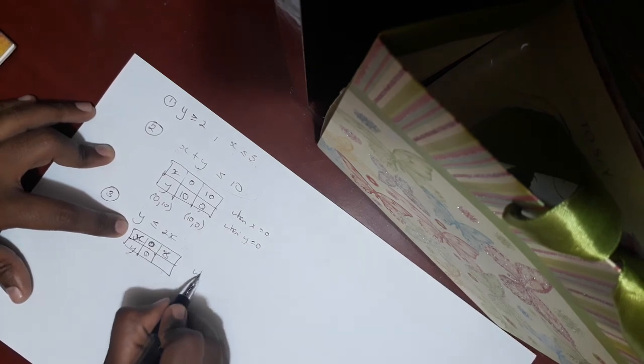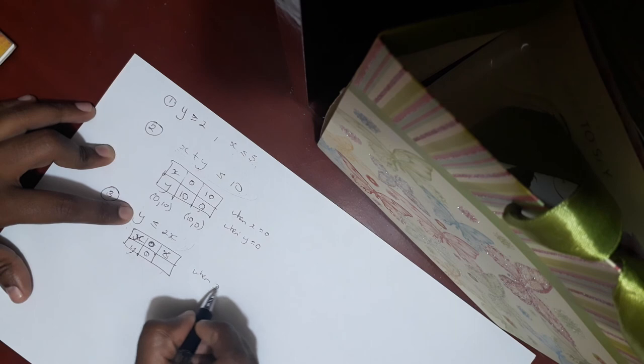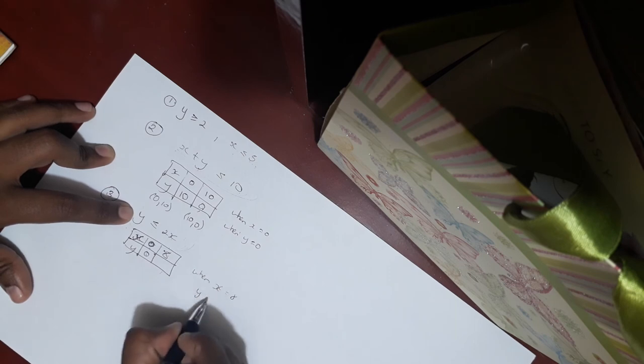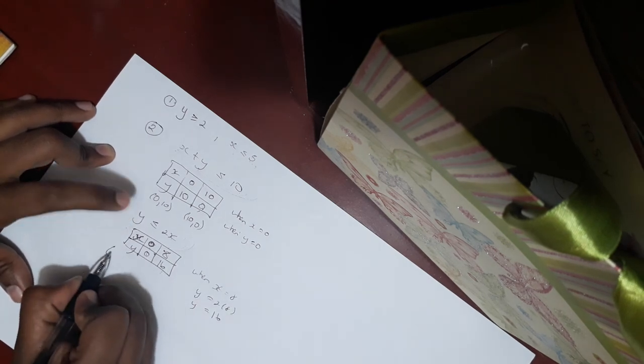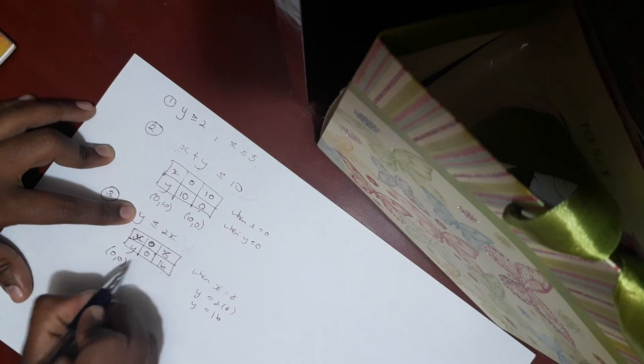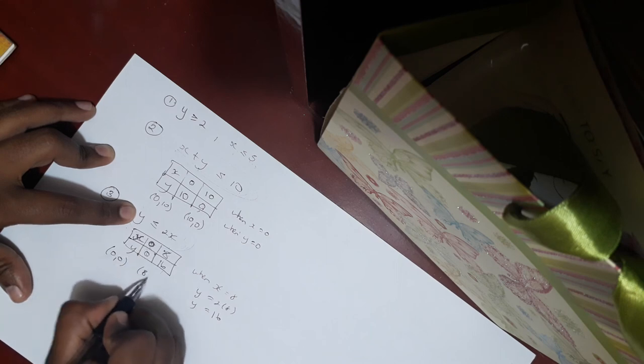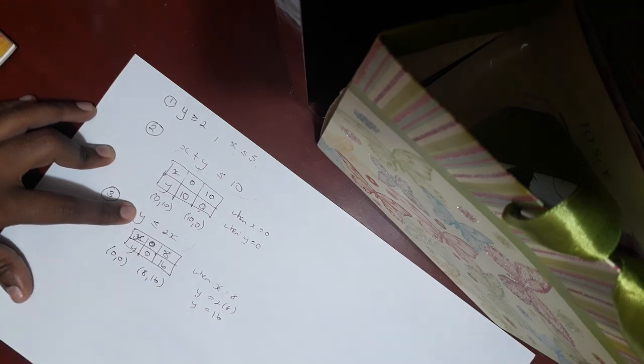And if you were to substitute that into your equation, when x is 8, obviously y will be 2 by 8, which is 16. And you simply put it into your box. So for this graph, y less than or equal to 2x, you have 0 with 0 and then 8 with 16, which you can plot.